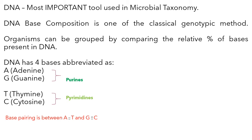Organisms can be grouped by comparing the relative percent of bases present in DNA. DNA has four bases abbreviated as A, G, T and C, of which A and G (adenine and guanine) are purines, and thymine and cytosine are the pyrimidines. Base pairing always happens between A and T (adenine and thymine) with two hydrogen bonds.